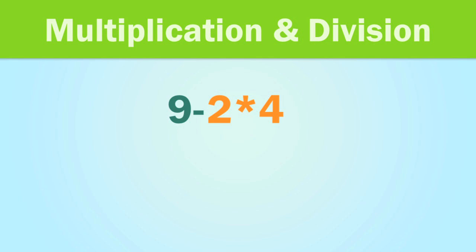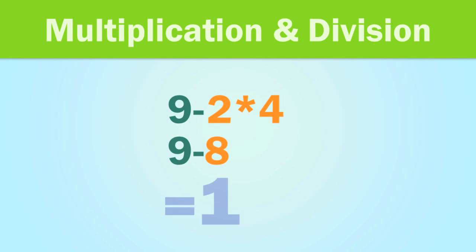If you have multiplication or division, that will come next. Here, we multiply 2 times 4 to get 8, and 9 minus 8 equals 1.